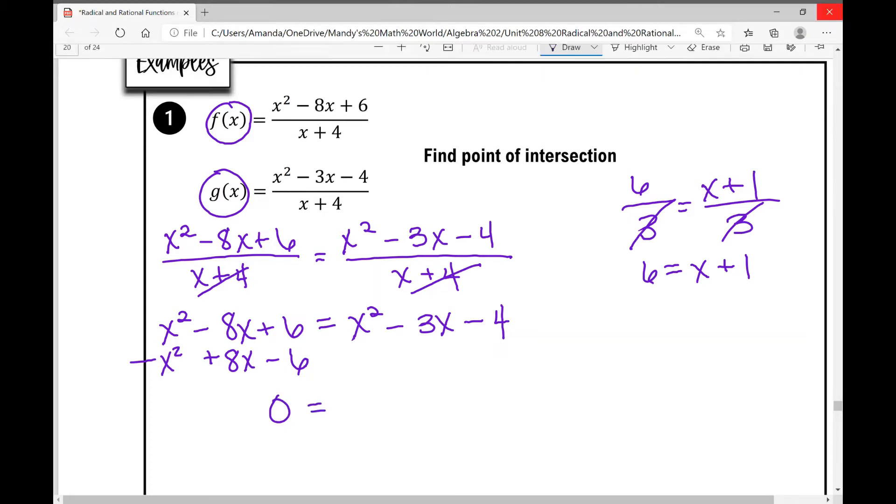but what I do to the left, I need to do to the right. So I'm going to be writing these terms underneath the terms that they are alike with. So minus x squared plus 8x minus 6. So x squared minus x squared is 0. Those cancel. Negative 3x plus 8x is 5x. Negative 4 minus 6 is negative 10.